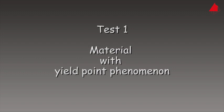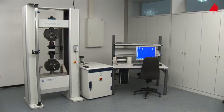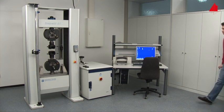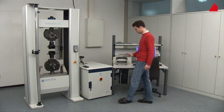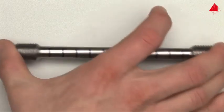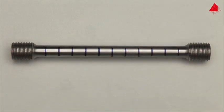The tensile test: First test, material with yield point phenomenon. In the first tensile test, a plain carbon steel with yield point phenomenon is to be tested. This is the test piece. It has a cylindrical test region with an original diameter of 10 millimeters and an original gauge length of 100 millimeters.